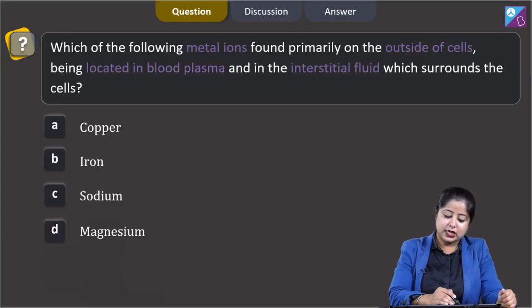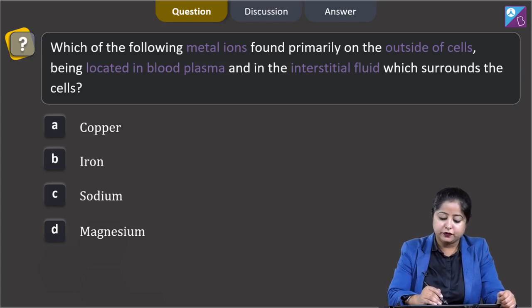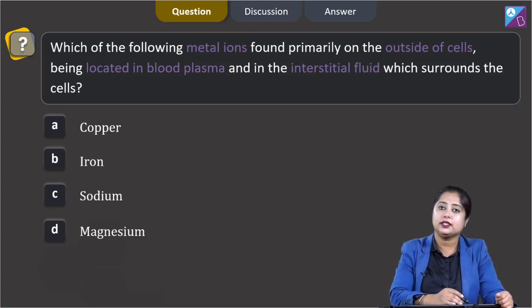Which of the following metal ions found primarily on the outside of cells being located in blood plasma and in the interstitial fluid which surrounds the cells?